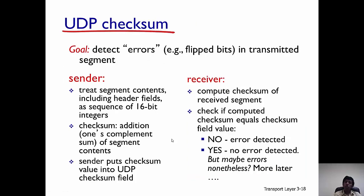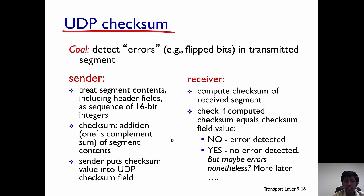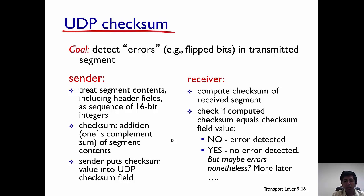Now let's briefly discuss what the UDP checksum is. The UDP checksum is there to detect errors. The sender treats the segments including the header fields as a sequence of 16 bits. The addition of the different segment contents — specifically a one's complement sum — is what is put in the checksum field. After this is done, the sender sends the UDP segment.